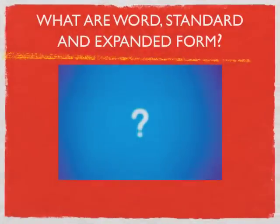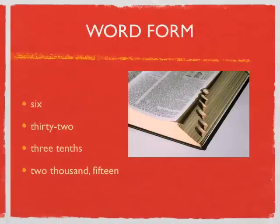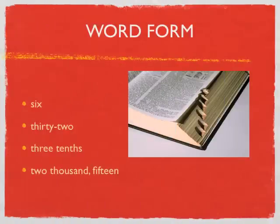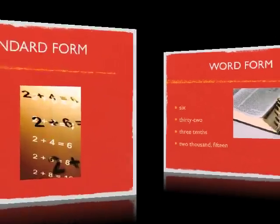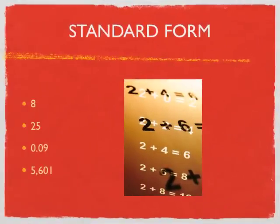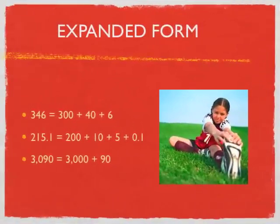So now that we've done our review of place value, what exactly are word, standard, and expanded form? Word form, believe it or not, is just that easy — it's just words. Standard form is just a fancy way to say number form, because that's all it is — just numbers. Expanded form is when you take a number and stretch it out. So if we've got 346, we stretch it into its different place values: 300 plus 40 plus 6. And if there's a decimal, we break those out too — like 0.1 for a value in the tenths spot.